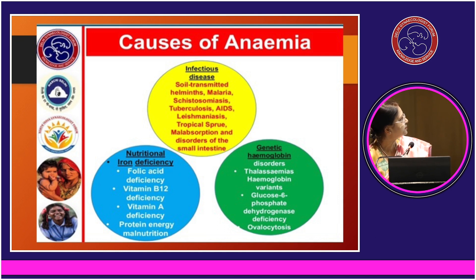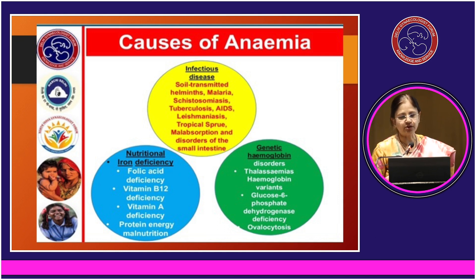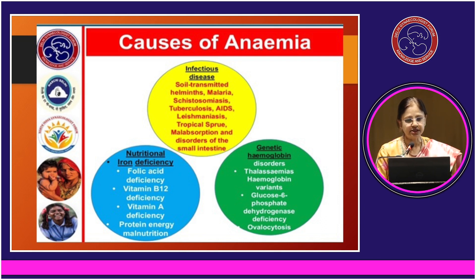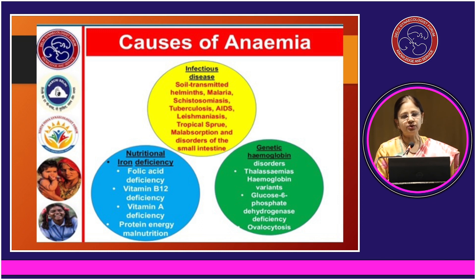This is a brief classification of the causes of anemia. The most important are the nutritional deficiencies, which cover iron deficiency, folic acid, vitamin B12, vitamin A, and protein energy malnutrition, as well as anemia due to infectious diseases and genetic hemoglobin disorders as the third cause.